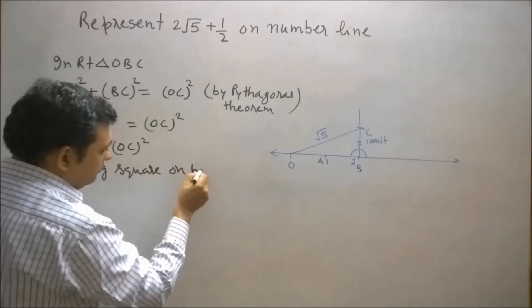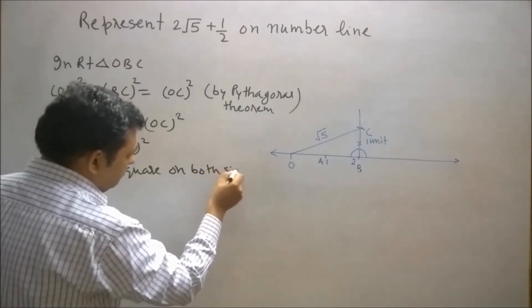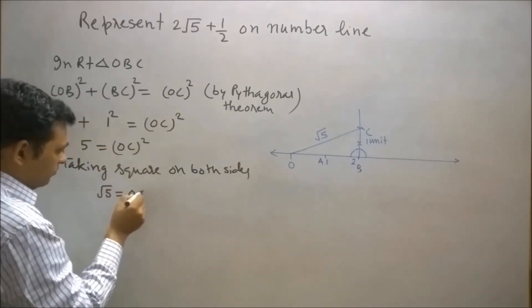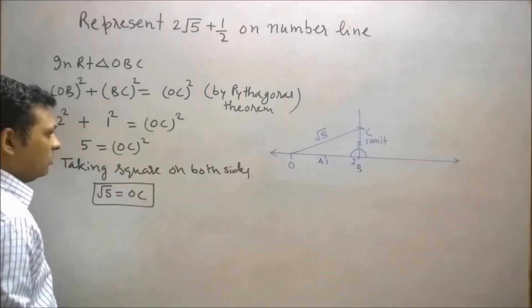Taking square root on both sides, OC will be equal to √5.